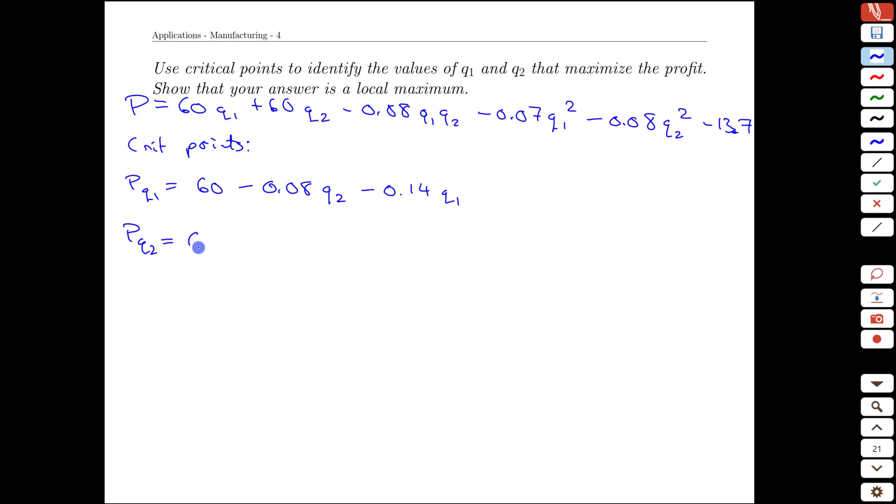We do the same thing for q2. We'll get 0, 60 q2s. Derivative is just 60. Similar logic for this expression. q2 is the variable that goes away, leaving 0.08 q1s. And q2 is our variable. We will have 0.16 q2. And those are our first derivatives.